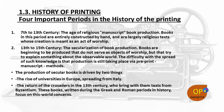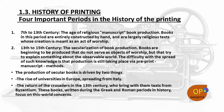Our next point is the history of printing. There are four important periods. First: 7th to 13th century — the age of religious manuscript book production. Books in this period are entirely constructed by hand and are largely religious texts whose creation is meant as an act of worship. Second: 13th to 15th century — the secularization of book production. Books begin to be produced that do not serve as objects of worship but try to explain something about the observable world. The difficulty with the spread of such knowledge is that production is still taking place via pre-print manuscript methods.